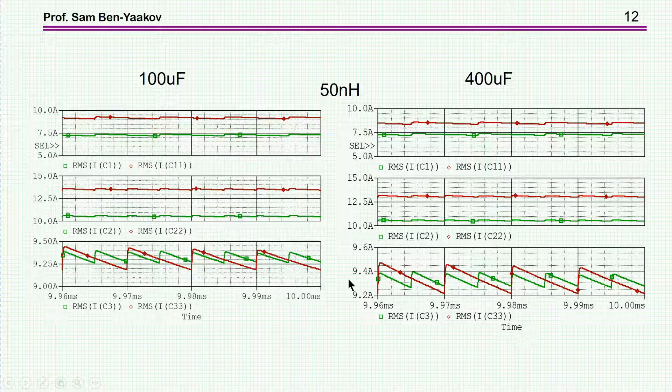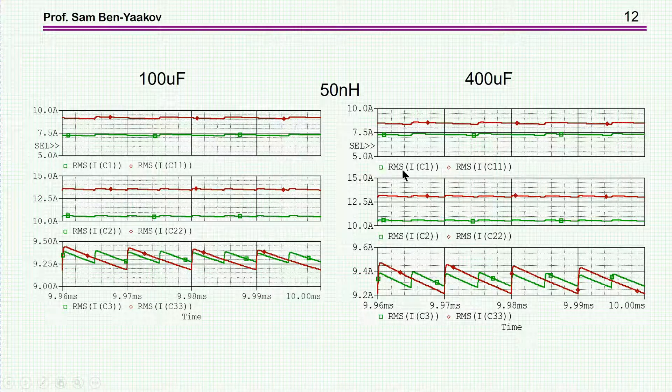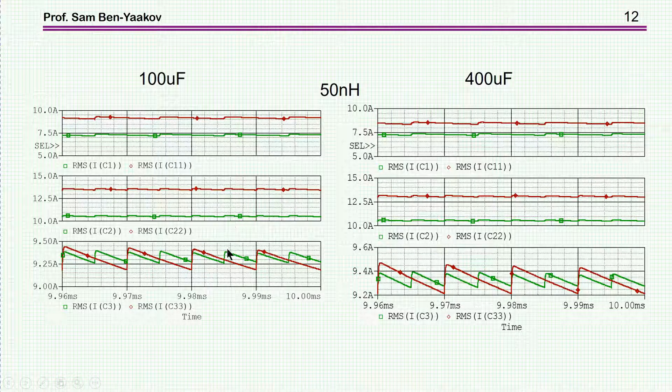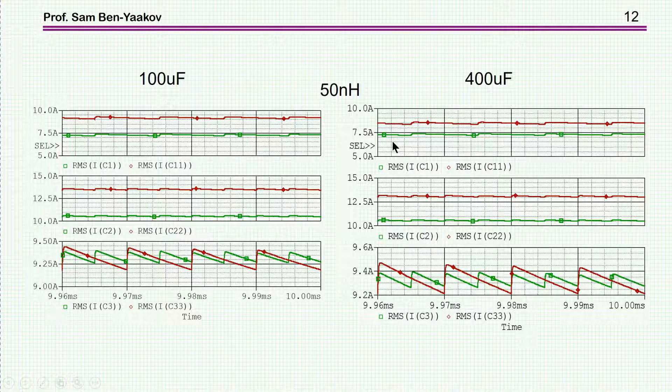Now, comparing these two, just to see them side by side, this is with the 100 microfarad, this is with the 400 microfarad. There is, of course, an improvement here due to the fact that this is a larger capacitor, but the situation is not very much different, except for here, perhaps. And this is for the case of the 50 nanohenry impedance between the ideal input voltage source and the input of the switched capacitor converter.